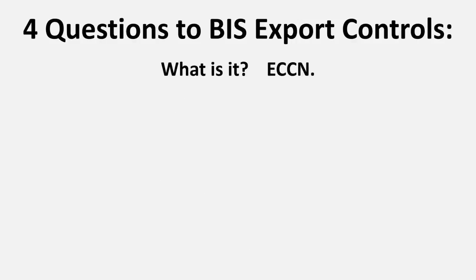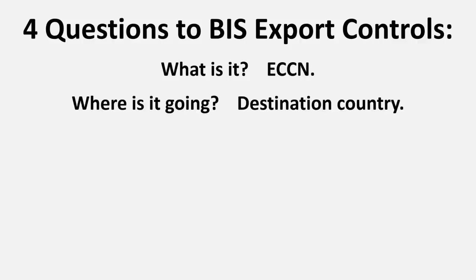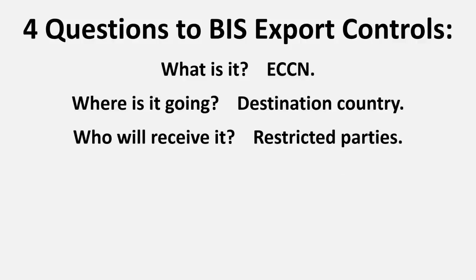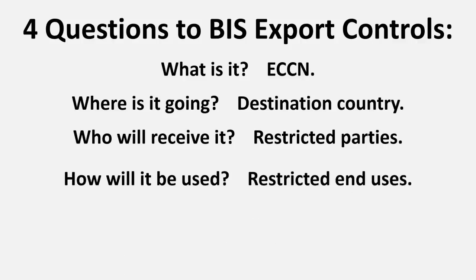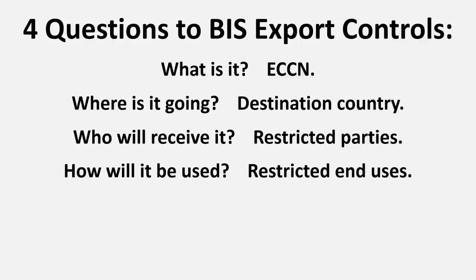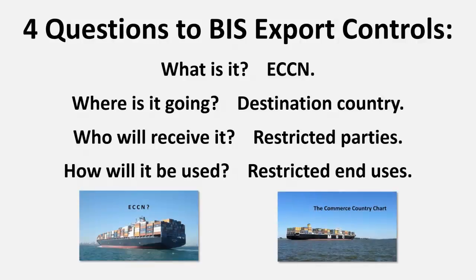You may recall from my previous videos the four basic questions for determining the export control requirements of the Department of Commerce: what it is — the export control classification number; where it's going — the destination country; who will receive it — restricted parties; and how it will be used — restricted end-uses. If you haven't already done so, you should watch the previous videos on ECCN and destination country, and I will provide links for them in the text below. This video will be on the last two basic questions on restricted parties and restricted end-uses.